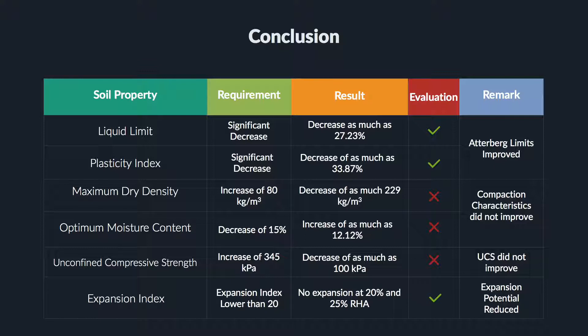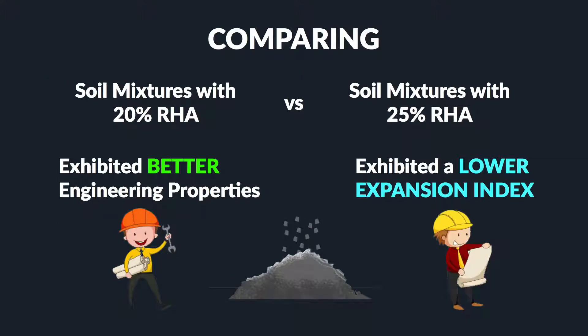Increasing the amount of RHA reduces the expansion index value of the soil. However, only the mixtures with 20% and 25% RHA comply with NSCP Section 303.5. Between the two mixtures, the 20% RHA mixture exhibits better overall engineering properties.